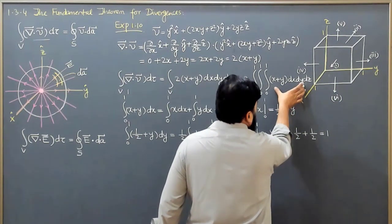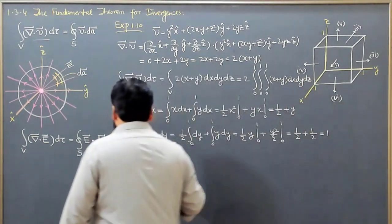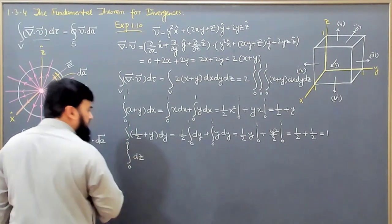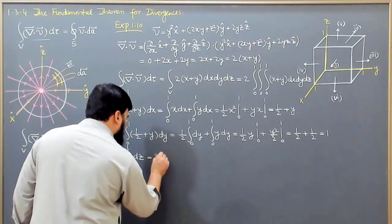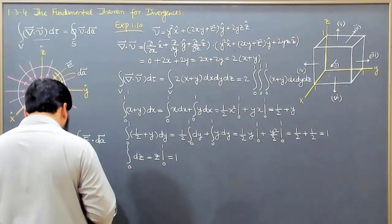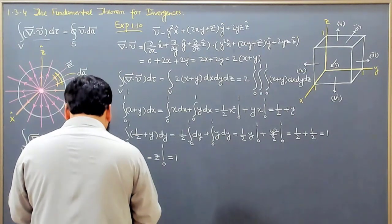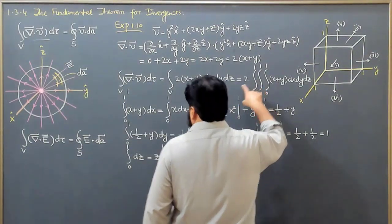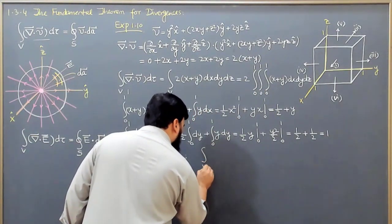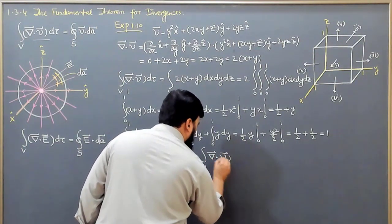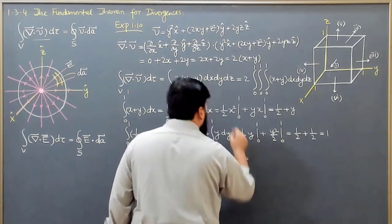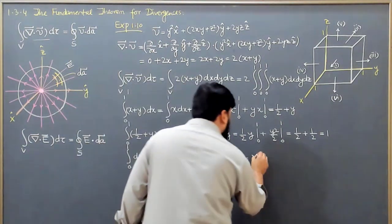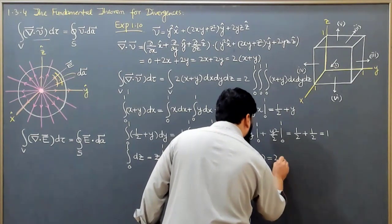Now that we've calculated up through the dy part, we integrate 1 dz next. From 0 to 1 in dz, this is simply z from 0 to 1, which equals 1. Putting these values together, the divergence of V over the whole volume equals 2 times 1, which is equal to 2.